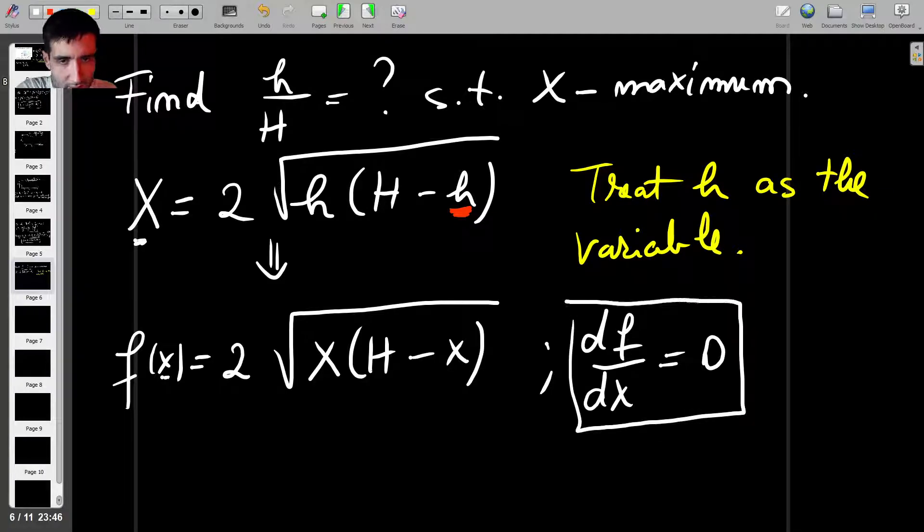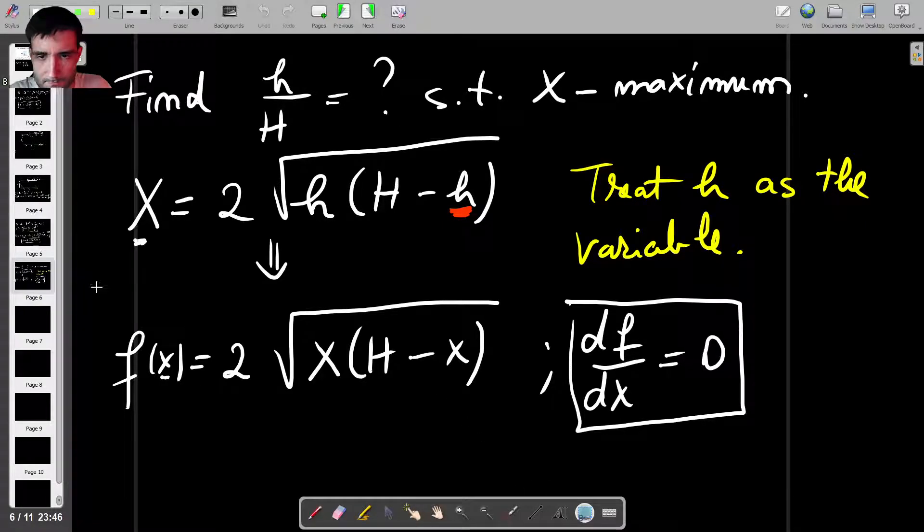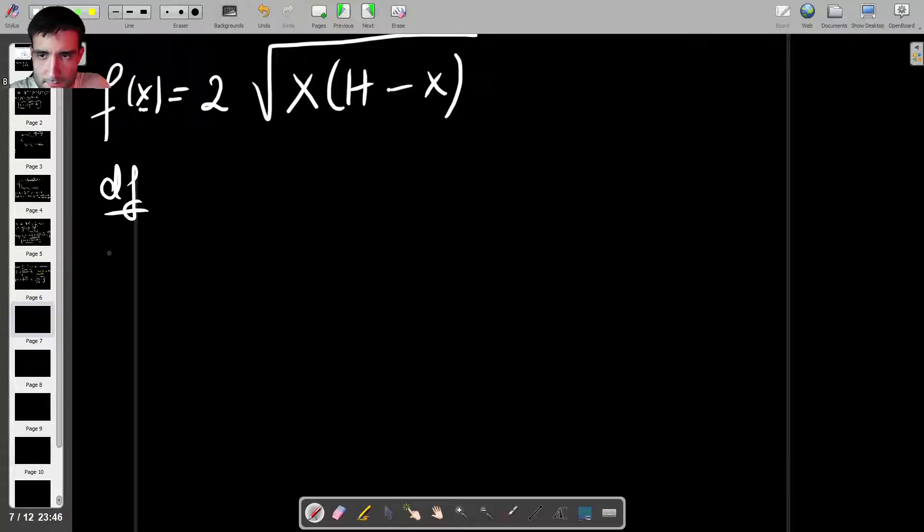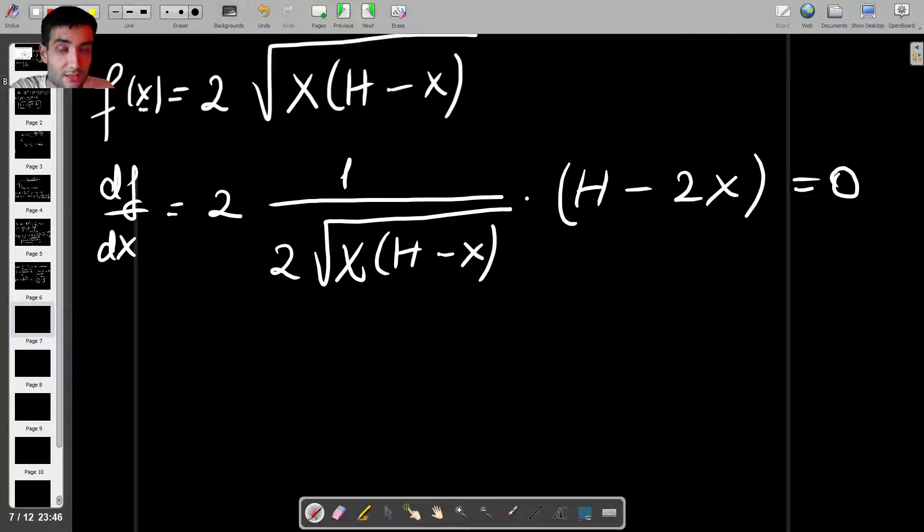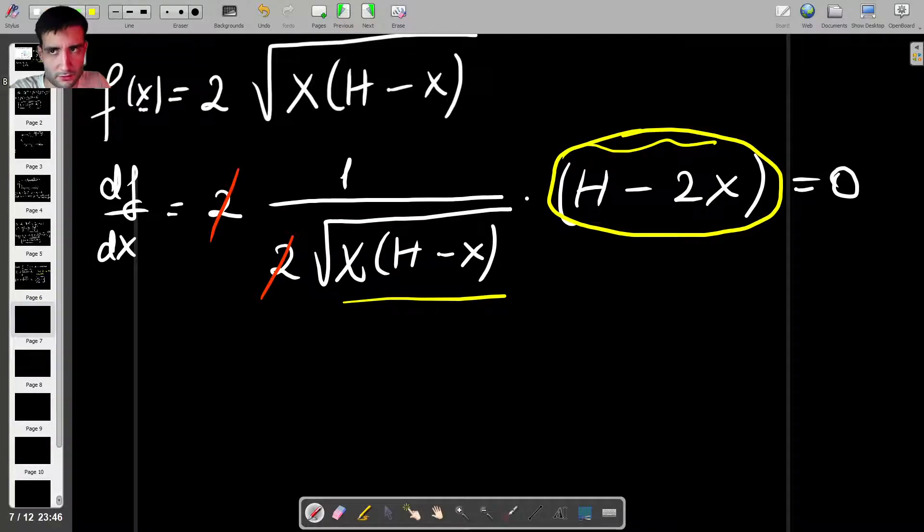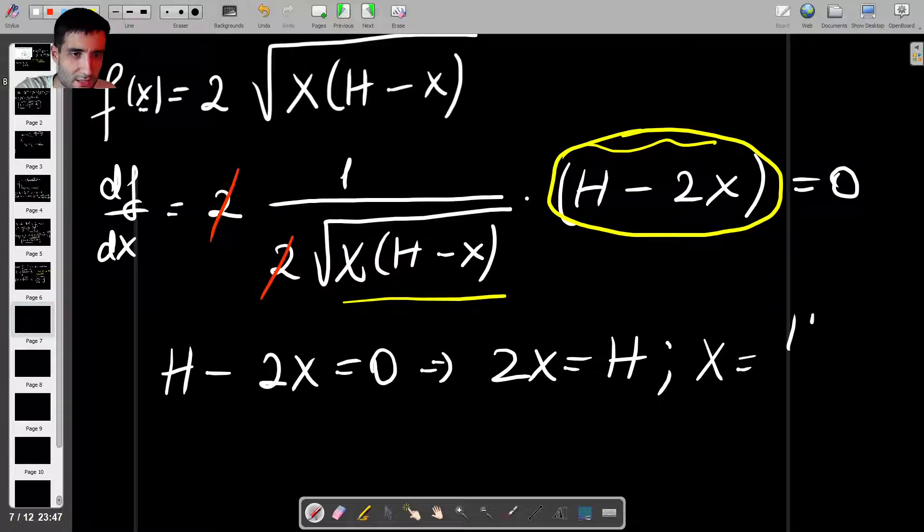Let's move this to a new page. So df by dX equals, the 2 is a constant, and then if I differentiate the square root, I'm going to get 1 over 2 square root of X times H minus X. And then I have to differentiate again because we're using the chain rule here. So if I differentiate what's inside the square root, I'm going to get capital H minus 2X. And we put the condition that this is equal to 0, and we have a fraction that is equal to 0, which means that for that to be possible, the numerator must be 0. So that means H minus 2X is equal to 0, which means that 2X is equal to H, therefore X is equal to H over 2.